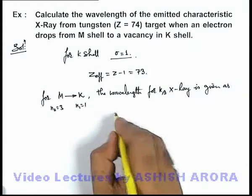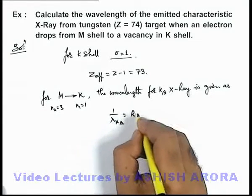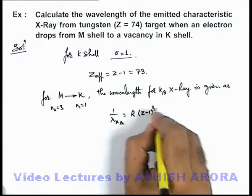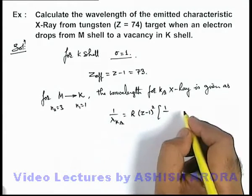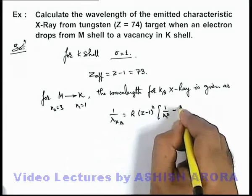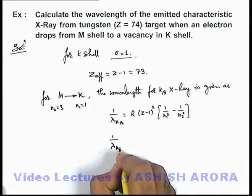This can be calculated by 1 by lambda K beta, which is equal to R times Z minus 1 square, times 1 by n1 square minus 1 by n2 square. If we substitute the values, this will be 1 by lambda K beta...